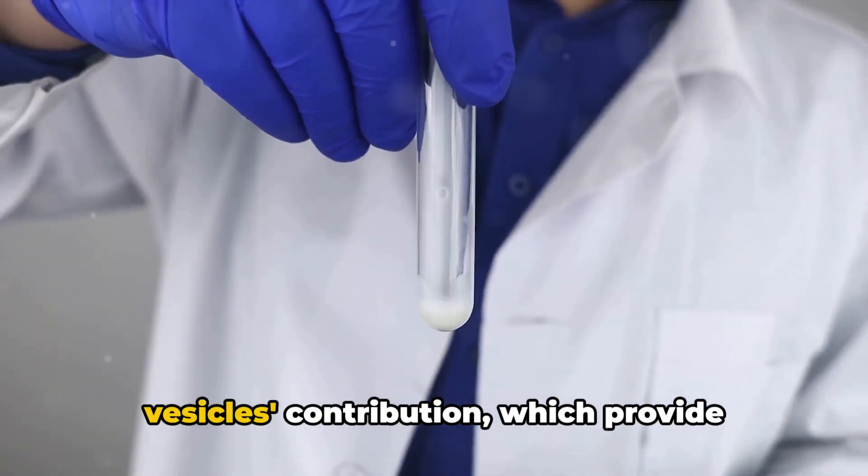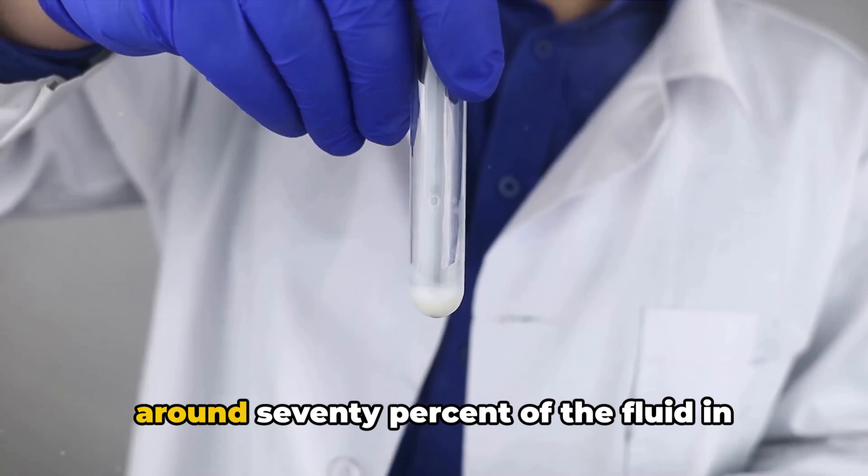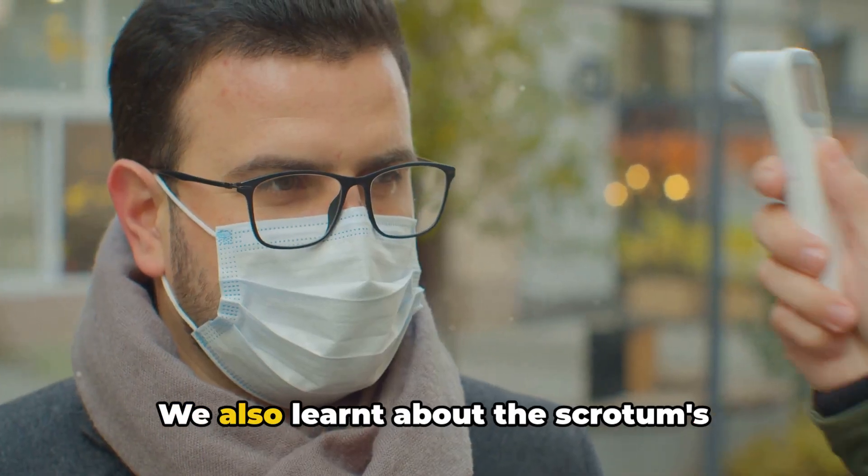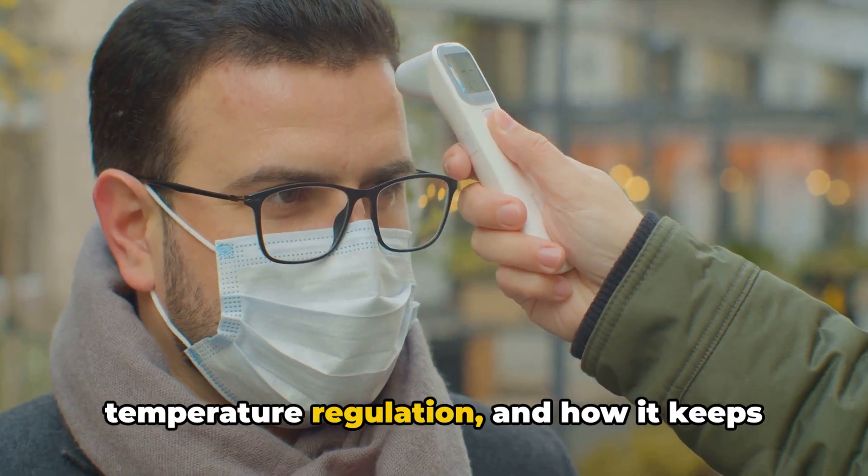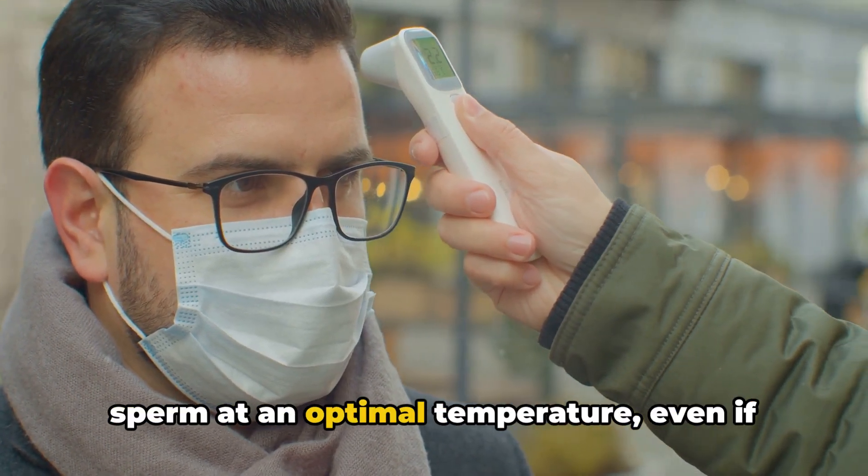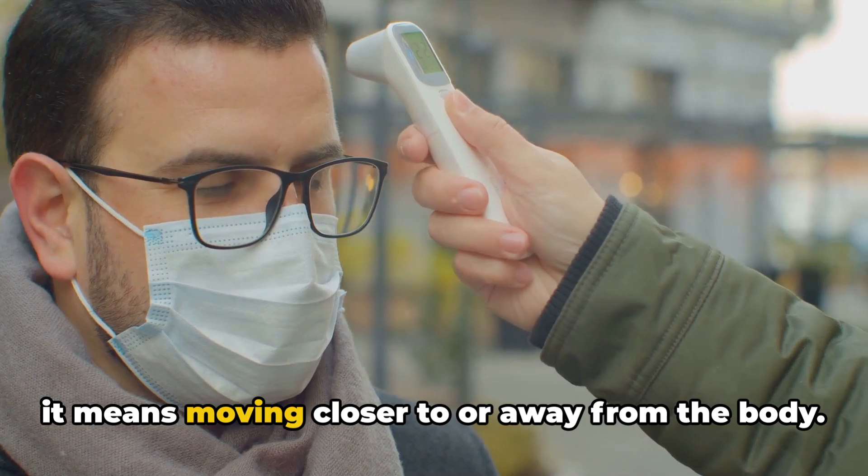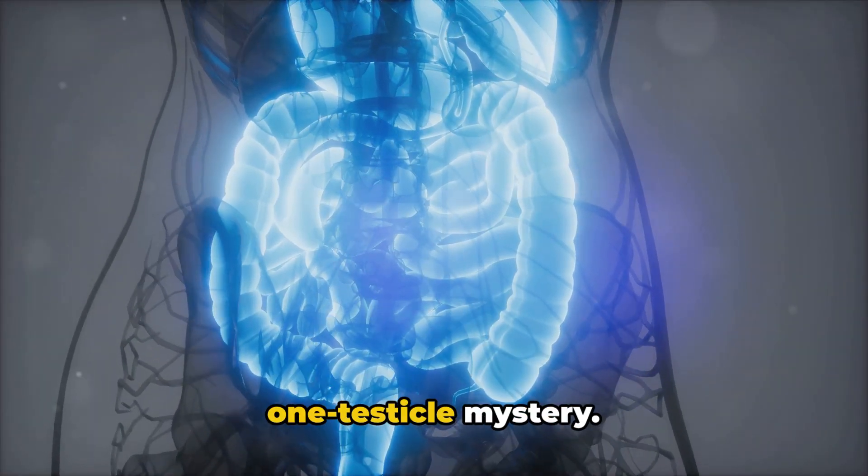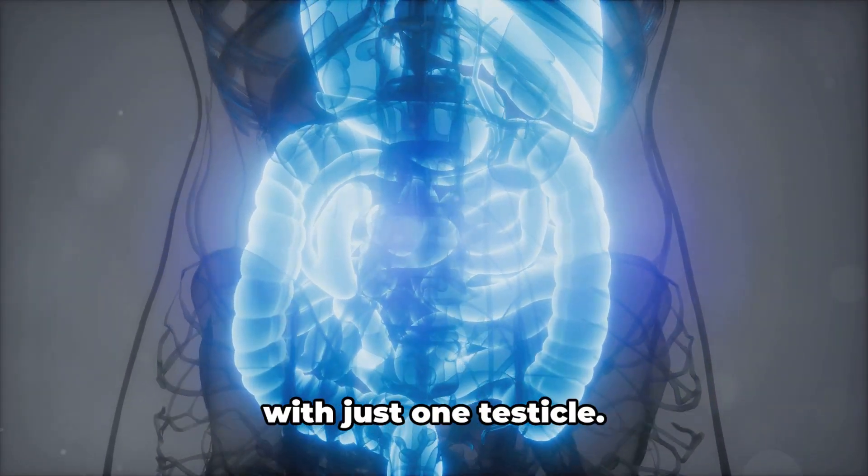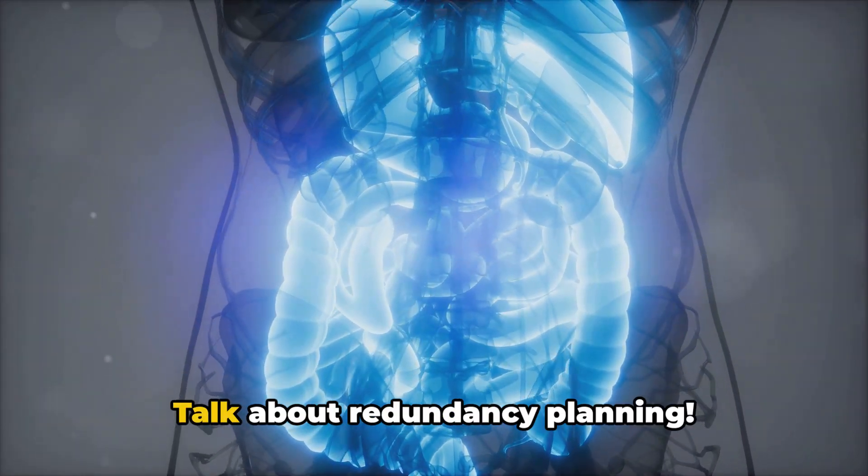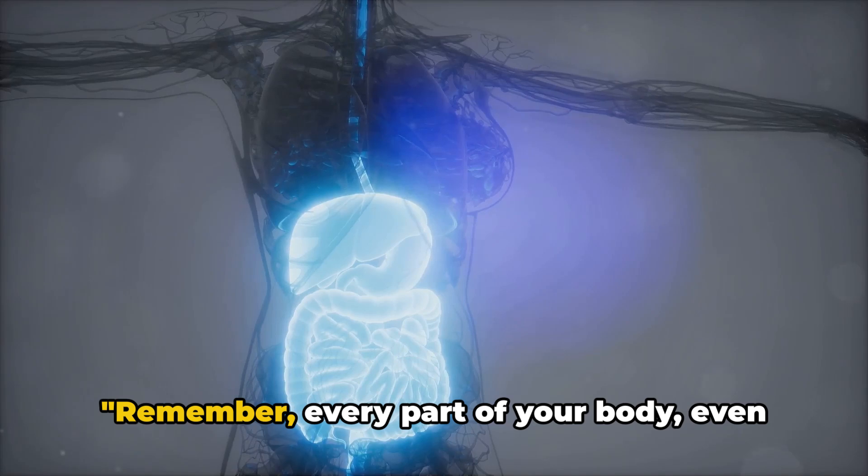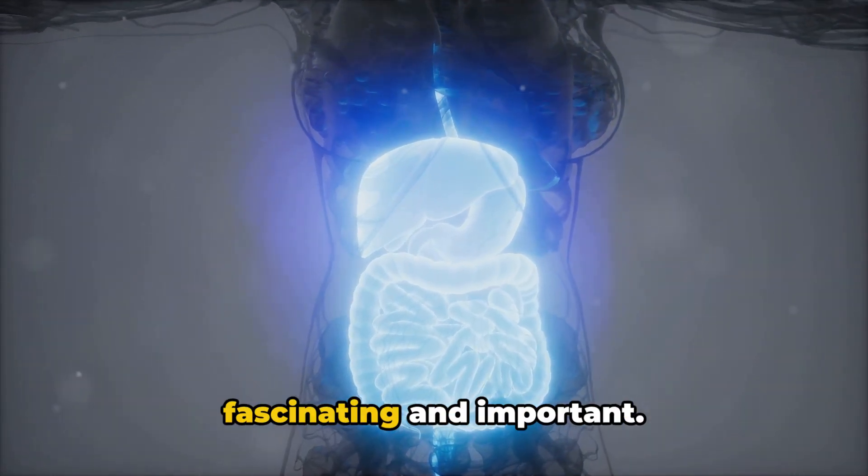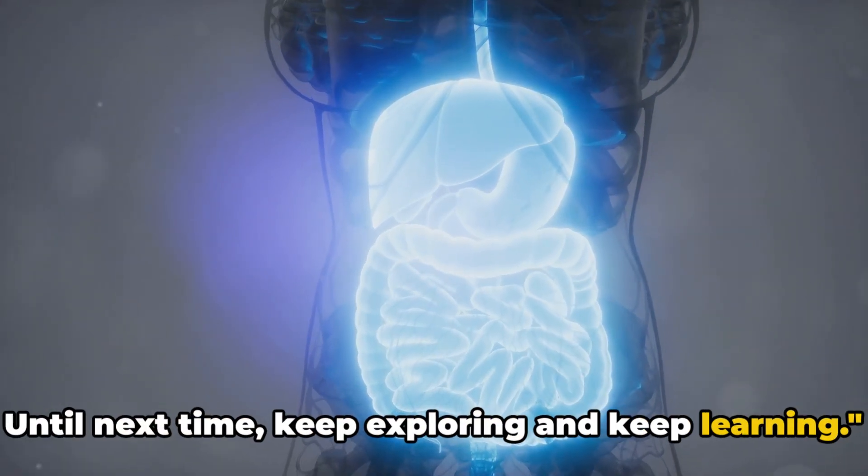Then we acknowledged the seminal vesicles' contribution, which provide around 70% of the fluid in semen, helping to nourish and transport sperm. We also learned about the scrotum's temperature regulation, and how it keeps sperm at an optimal temperature, even if it means moving closer to or away from the body. And finally, we addressed the one testicle mystery. Turns out, a man can function perfectly with just one testicle. Talk about redundancy planning. Remember, every part of your body, even the ones we don't often talk about, is fascinating and important. Until next time, keep exploring and keep learning.